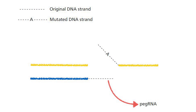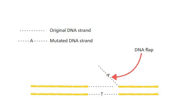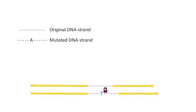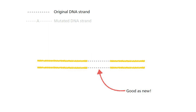The reverse transcriptase uses the corrected sequence of the pegRNA as a template to synthesize a corresponding stretch of DNA strand. The newly synthesized stretch of DNA bonds to the untouched original strand whilst also creating a flap, which the new DNA is supposed to replace. The flap is cut out since it is an unnatural DNA structure. However, the new stretch of DNA contains the correct sequence while the other does not, so the two strands are mismatched. This is repaired by cellular enzymes that recognize this misalignment, using the corrected sequence to create a corresponding strand and thereby removing the erroneous deletion or insertion.